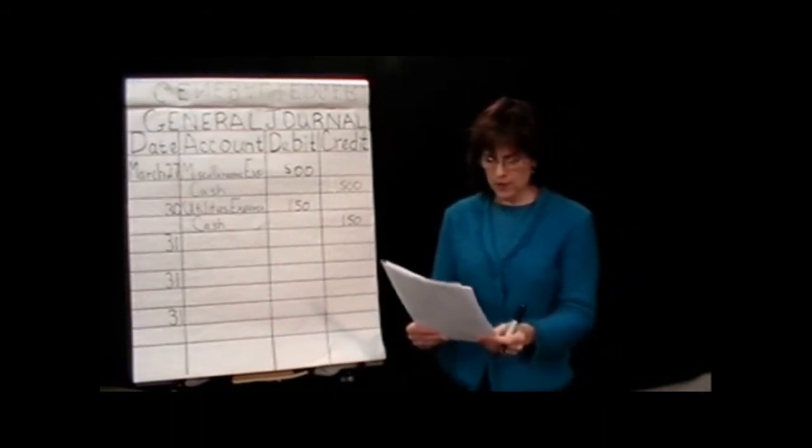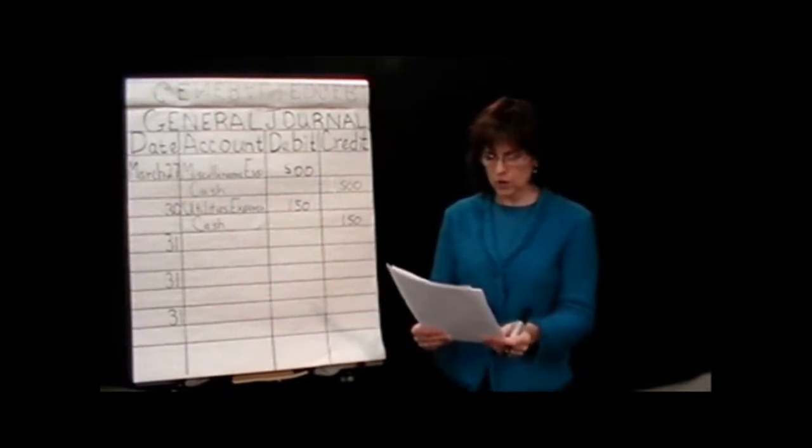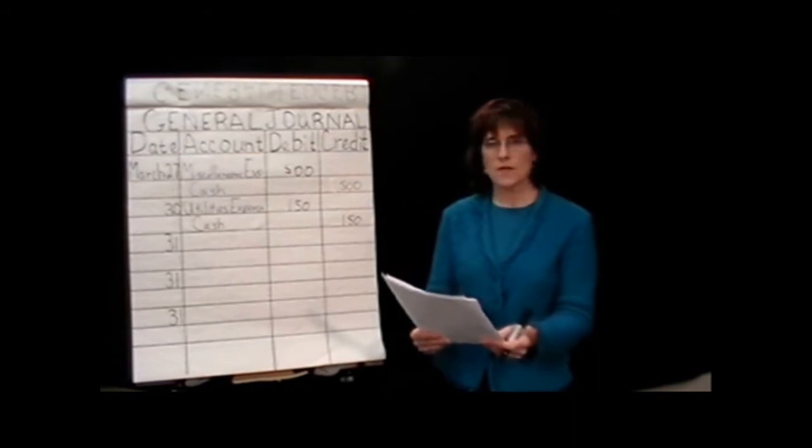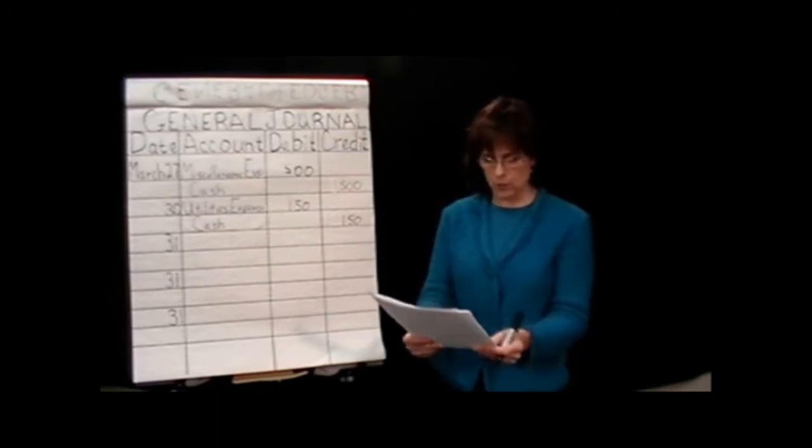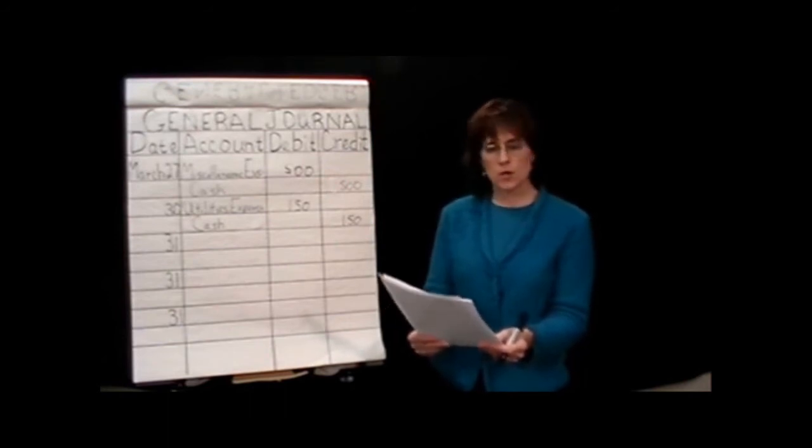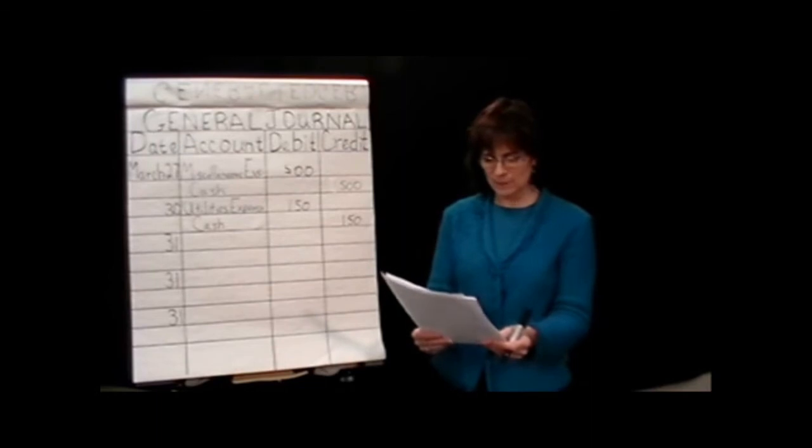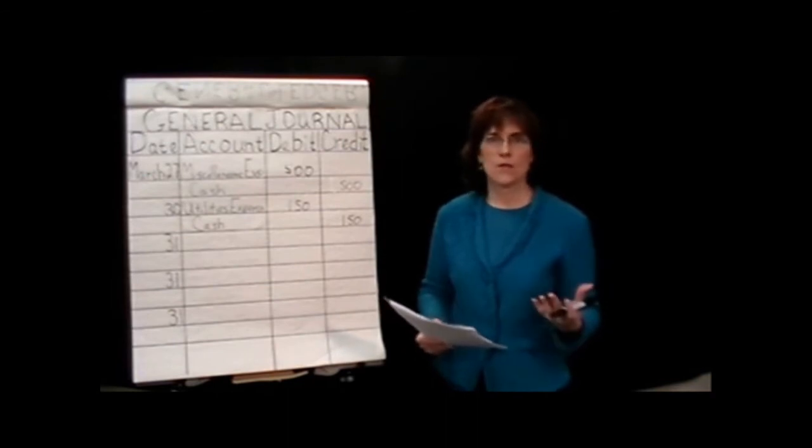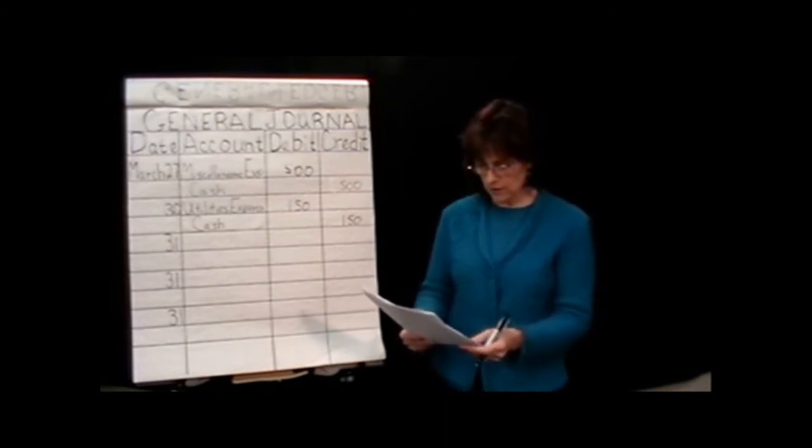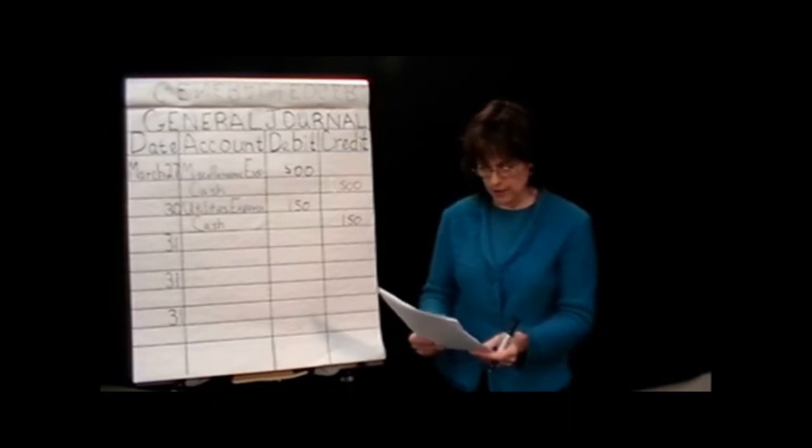All right, we have a few more. On the 31st, it says, fees earned and billed to customers for the month of $24,800. So fees earned, that is what we're in the business of doing. That's our revenue account. We're in the business of providing services for our customers and earning fees. And it says we've billed our customers. So I have to ask you here, is cash involved? No, it's not involved. There's nothing anything about cash. We billed our customers.